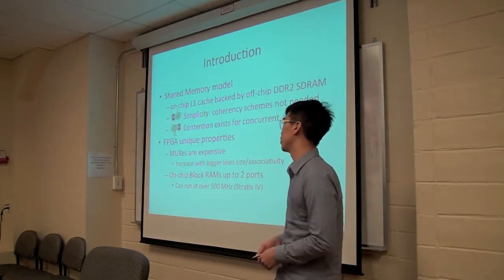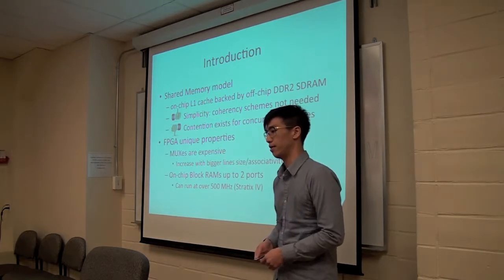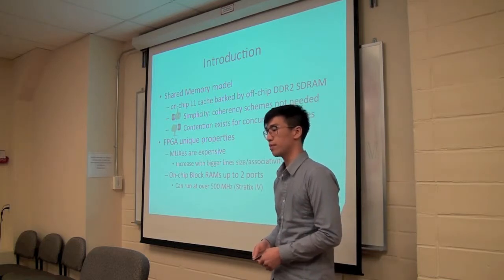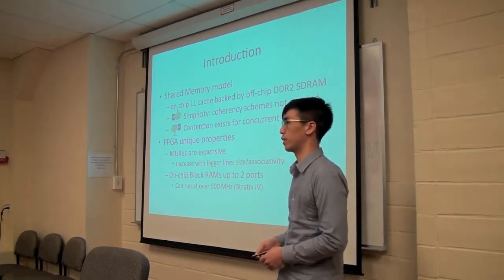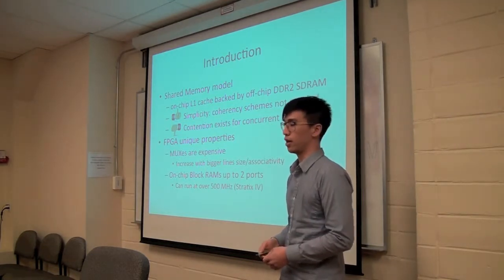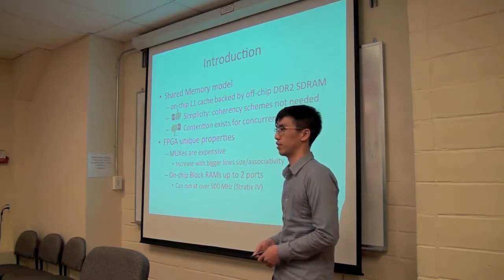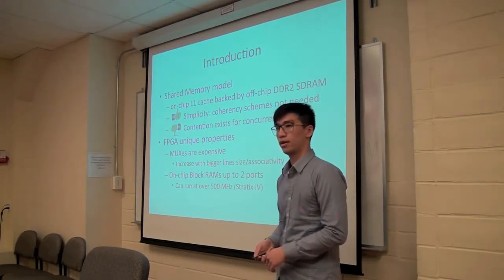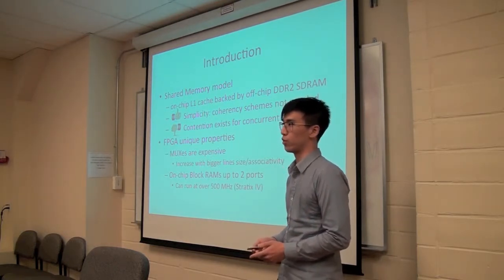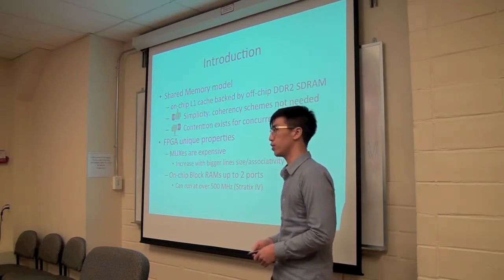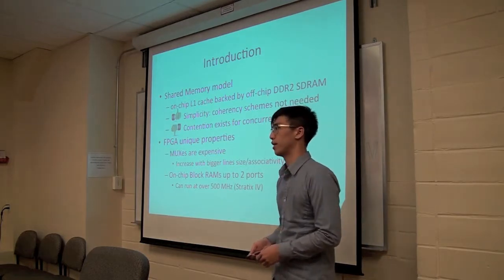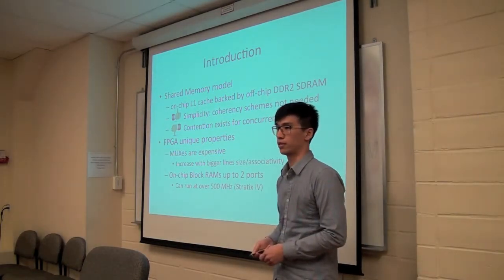In implementing caches there are properties which are unique to FPGAs. Muxes take up a lot of area which can impact Fmax significantly and in caches muxes are used to select a word from a cache line. So with bigger cache lines mux sizes will also increase as well. They're also used in set-associative caches to select between the different sets. Now FPGAs have these on-chip block RAMs which have up to two ports which means that they can do up to two reads or two writes at any given point in time. But what's more interesting is that these on-chip block RAMs can run very fast and oftentimes much faster than the speed of the overall system. So we take this to an advantage in the system.